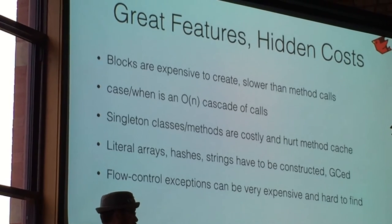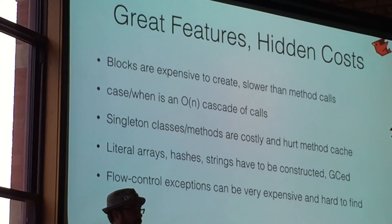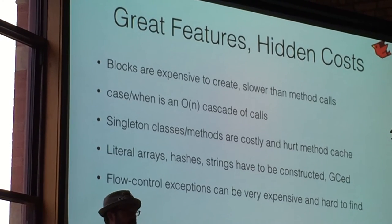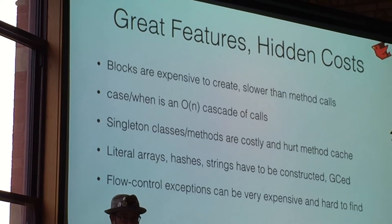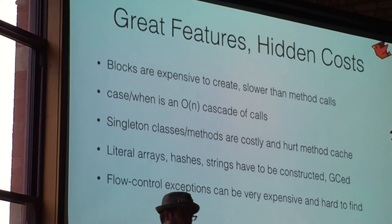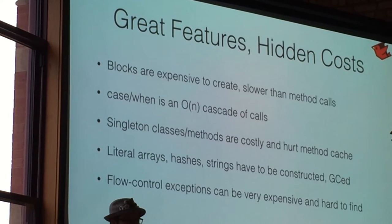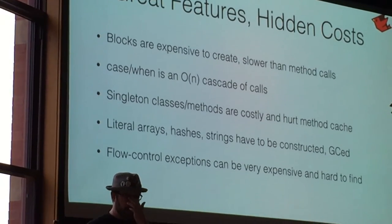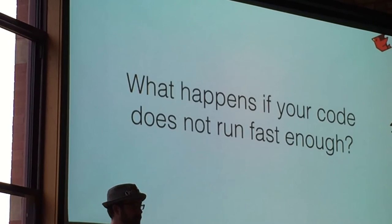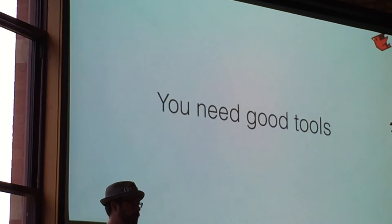Case/when? A lot of folks don't realize it's not like a constant-time switch from C or Java. It's checking each of those individually. So it's O(n) doing all those extra calls. Singleton classes and methods seem really cheap, but extremely expensive on both CRuby and JRuby. Lots of really nice literals. We've started to see some improvement in Ruby 2.3 — you can now flag the file as being all frozen strings, which will reduce that overhead of constantly creating new strings all the time. Not measuring exceptions as being expensive. So what happens if you've got your code out there and it doesn't run fast enough?